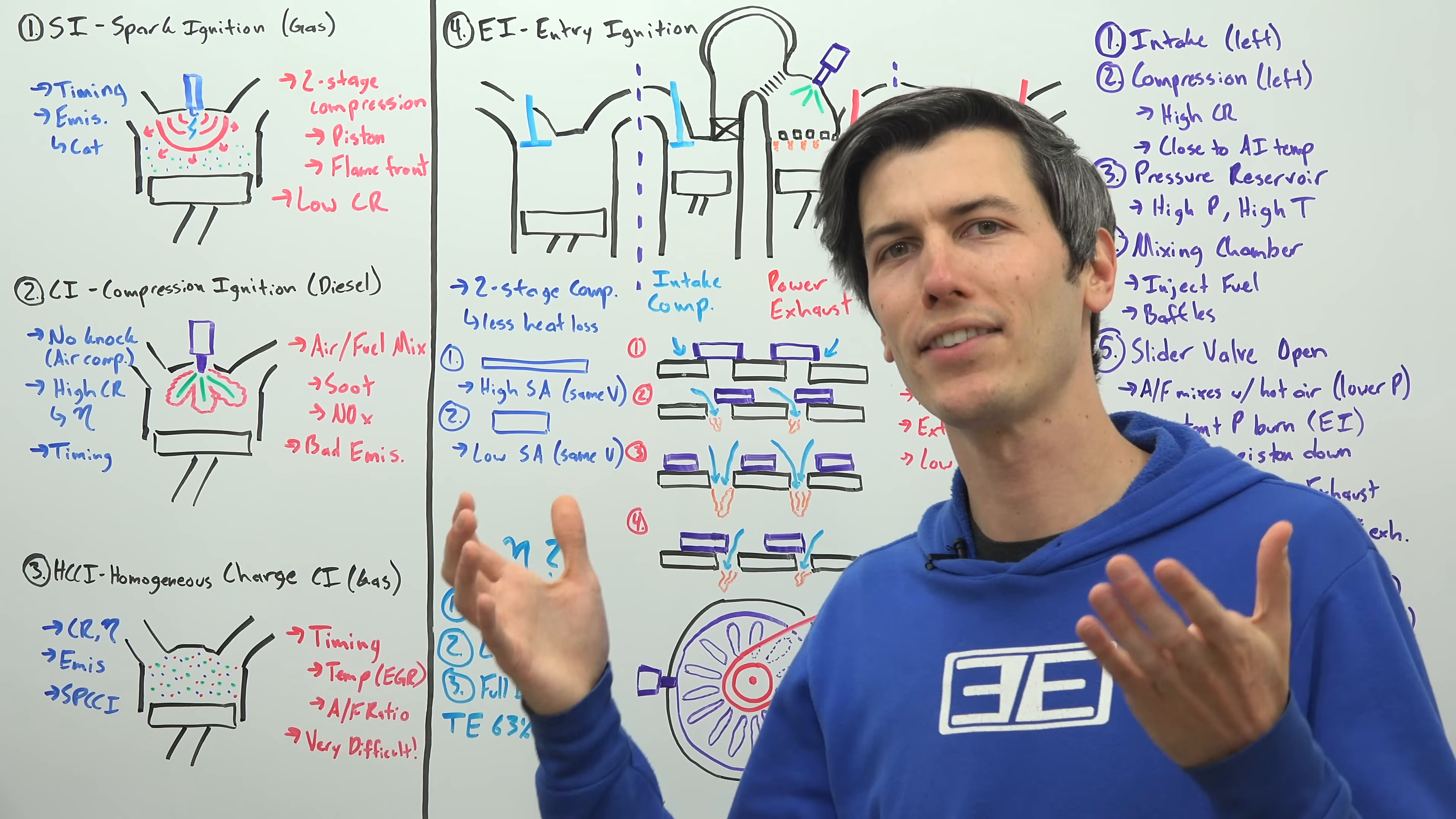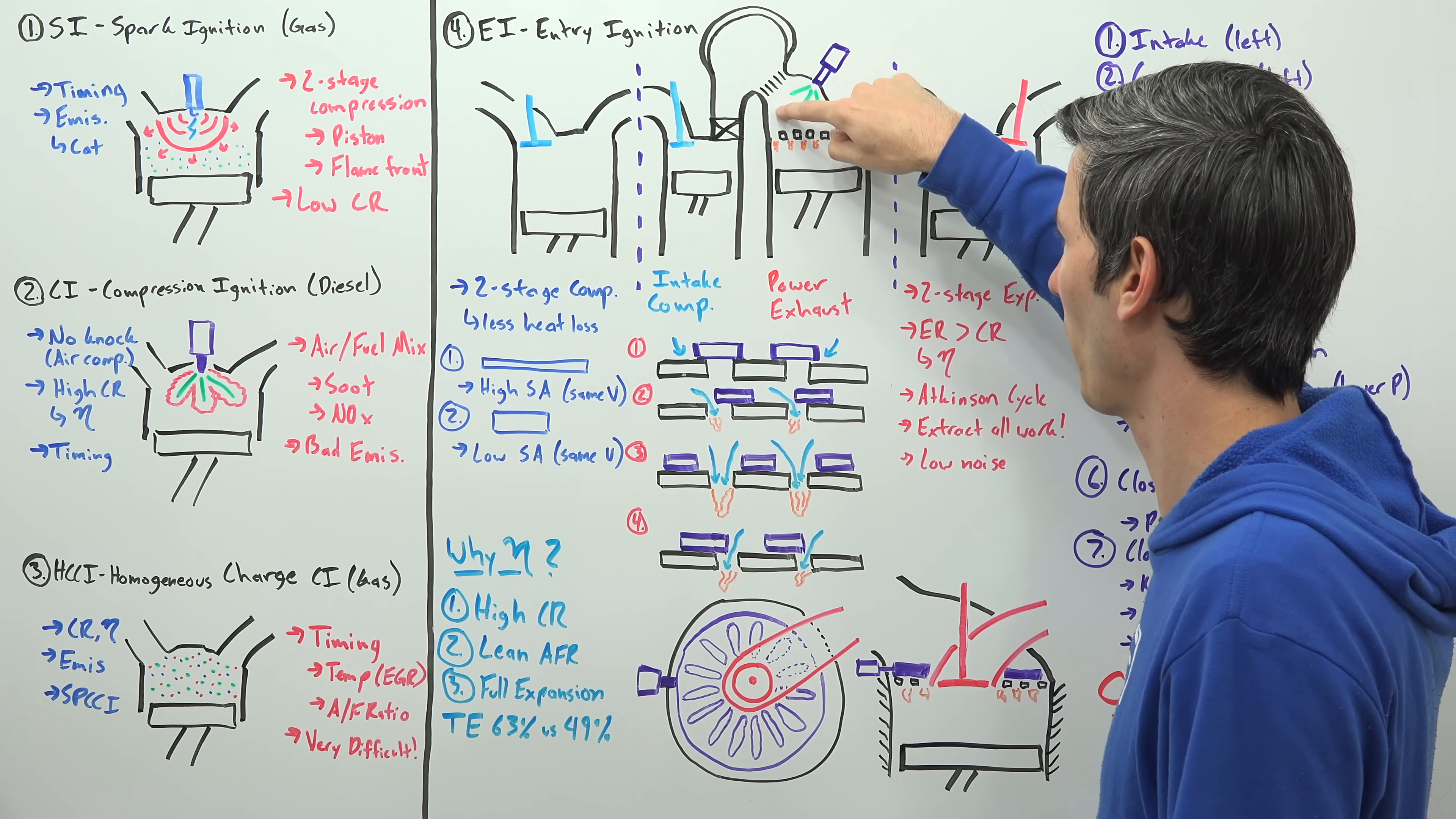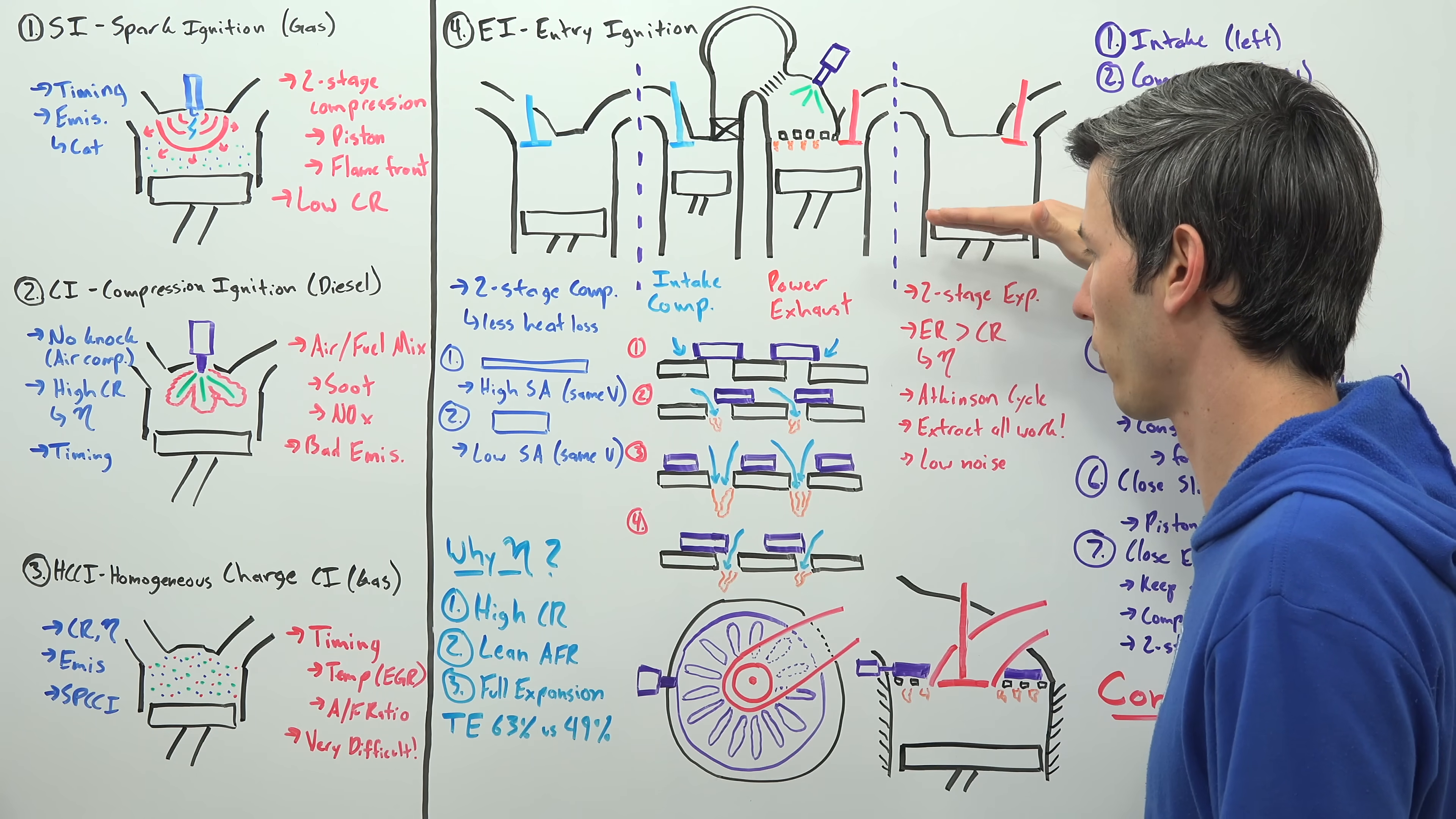So to summarize, why is an entry ignition engine more efficient? And it starts with being able to use a significantly higher compression ratio versus gasoline engines. It's able to use a very lean, meaning not too much fuel relative to how much air there is, air fuel ratio and reason being is because you have that mixing chamber where you mix the air and fuel really nicely. And then as it passes in, it automatically ignites because of the temperature within that combustion chamber. And then finally, it's more efficient because it's able to take advantage of full expansion and get as much useful work out of that combustion as possible using that second stage expansion chamber.